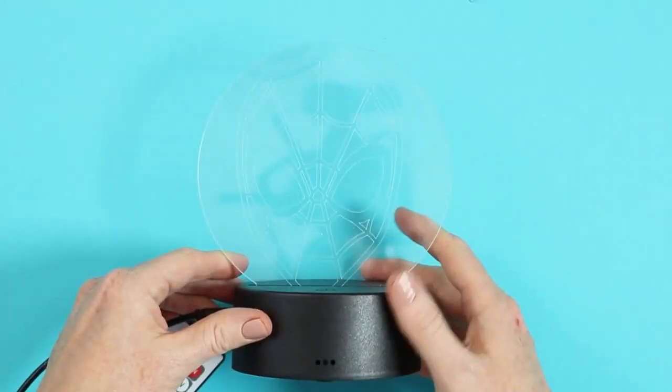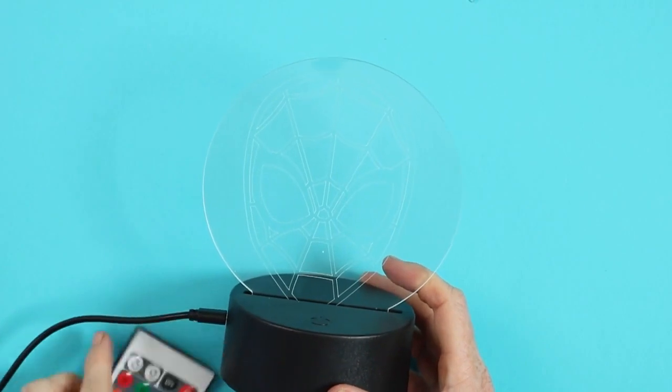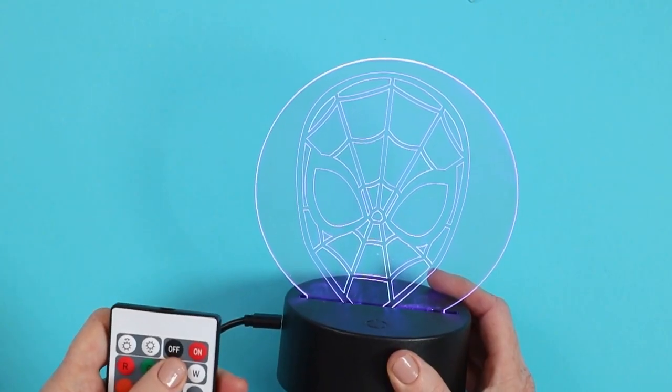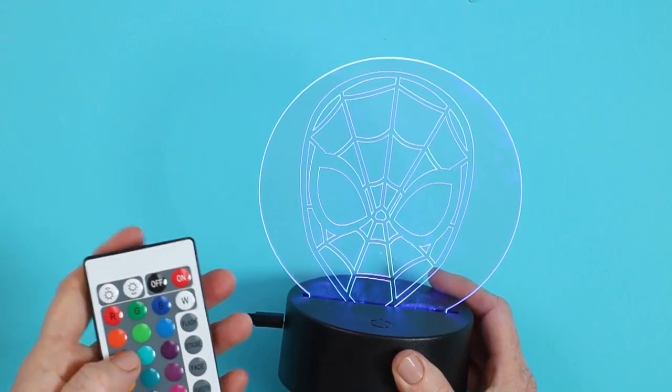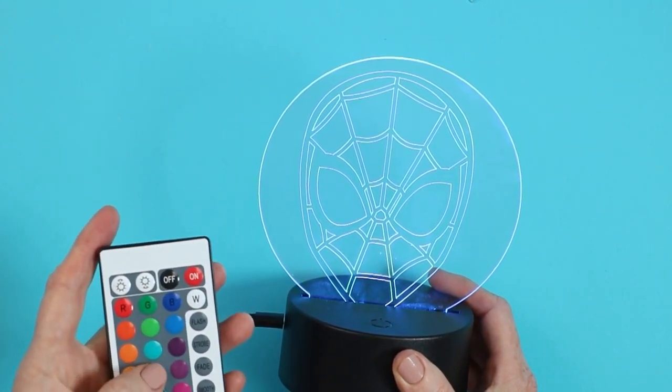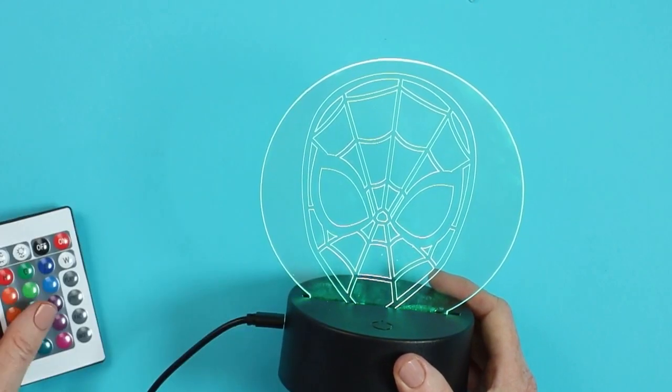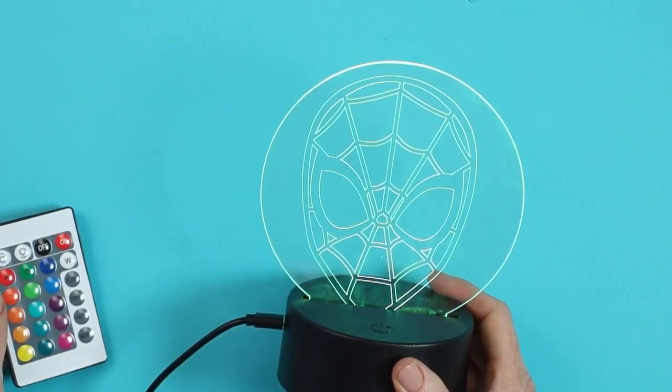Once that's down and into place, your nightlight is ready to go. And all that's left to do is to turn it on and start changing those colors to different colors with your remote and watch all the fun with this nightlight. So I'll just repeat with all of my other designs.